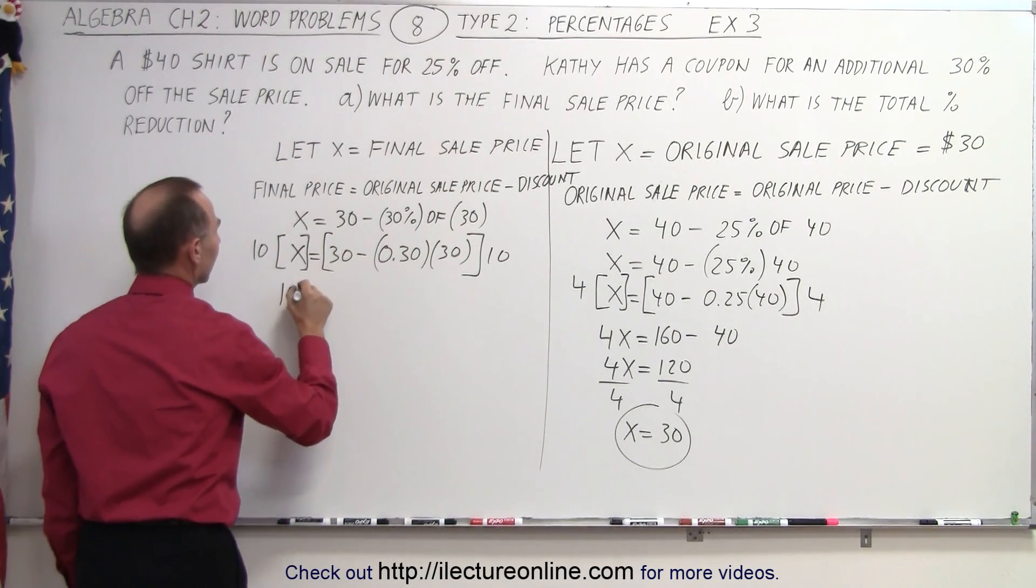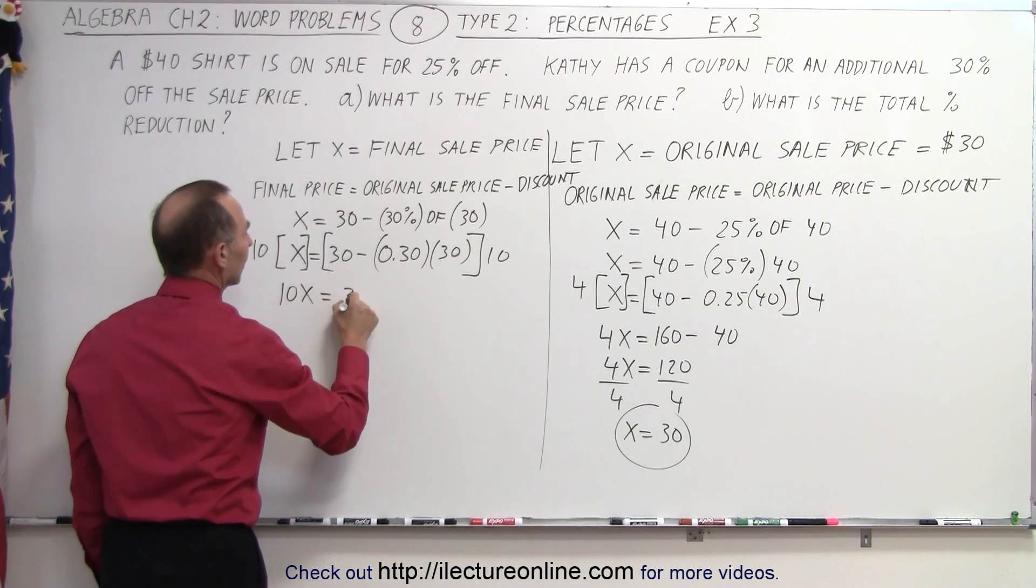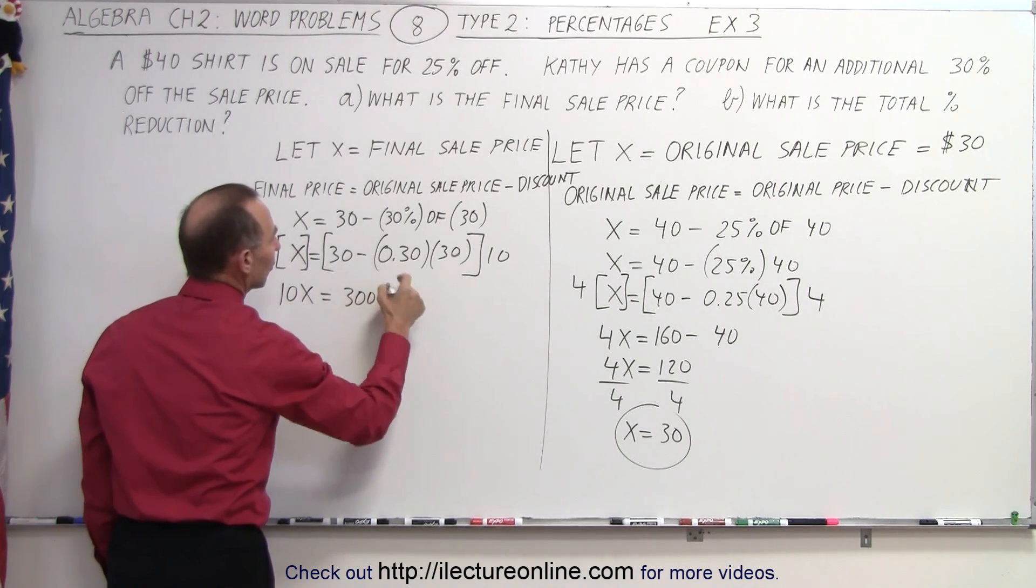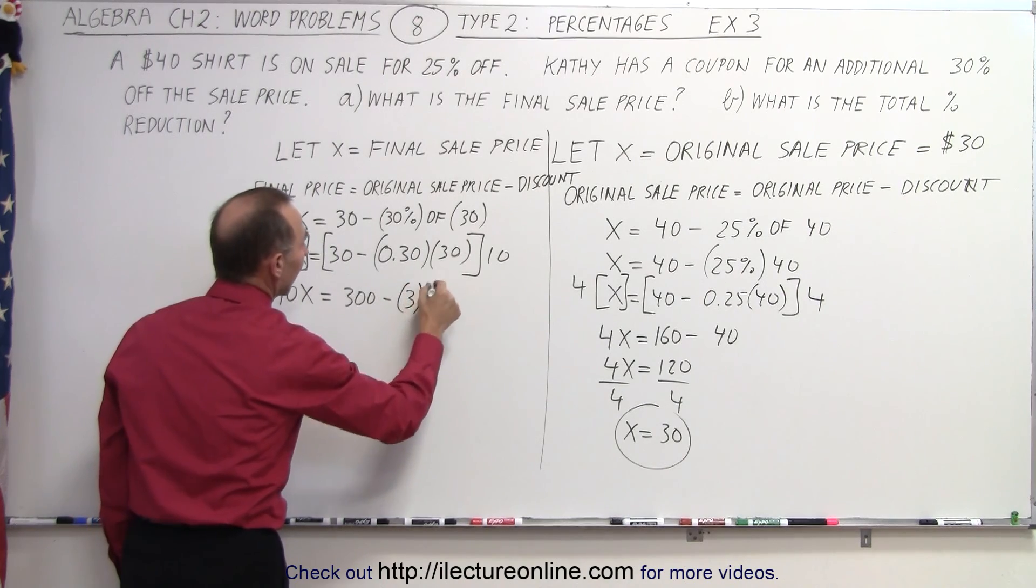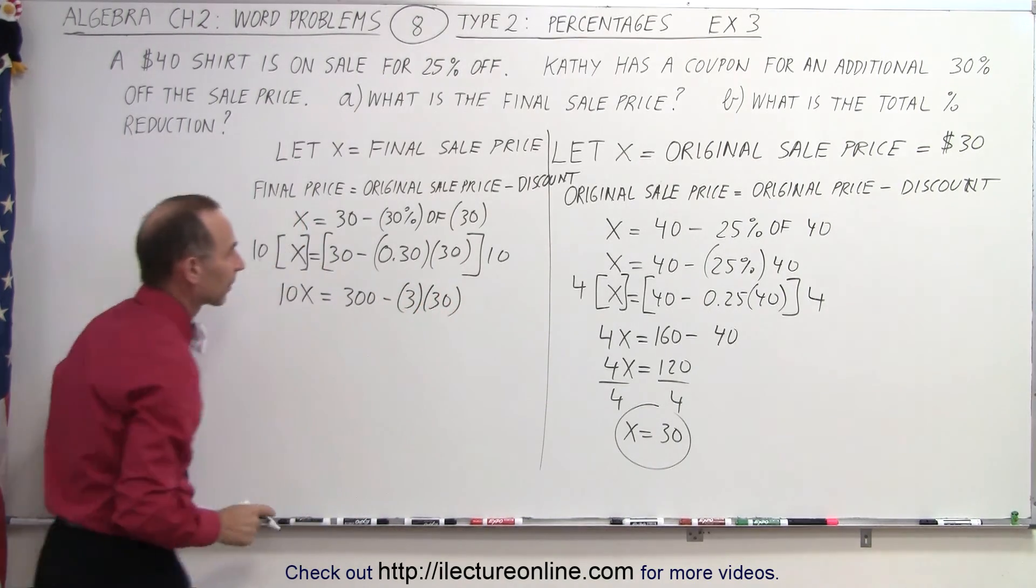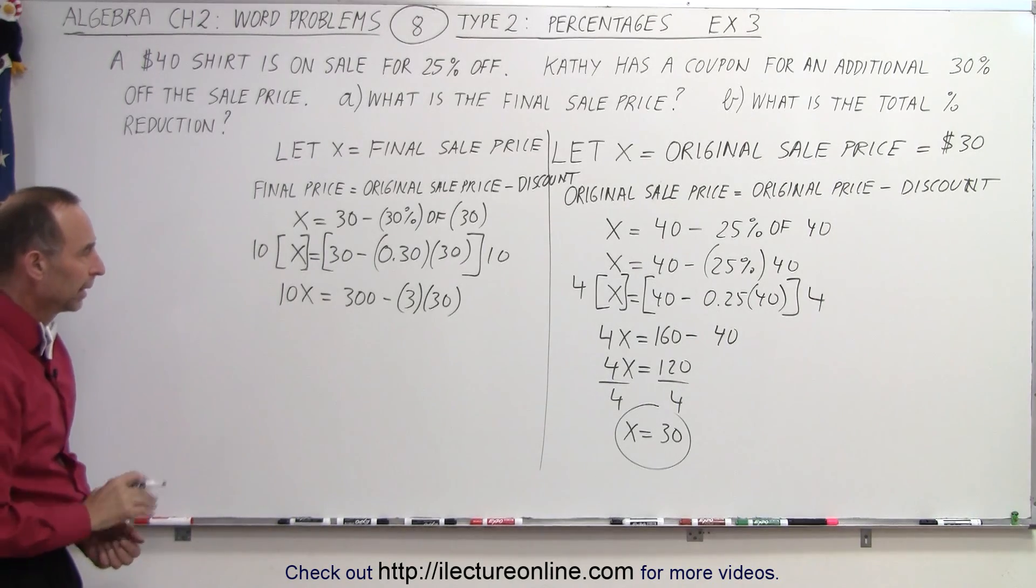So this gives me 10x is equal to 300 minus 0.3. That would be, that now would become 3 times 30.